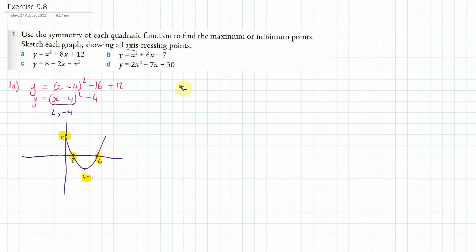Let's do example b. First of all, I'm going to complete the square. That gives x plus 3, all squared, subtract the square of 3 which is 9, minus 7. So the equation becomes y equals x plus 3, all squared, minus 16. That means the minimum point is at (−3, −16) — making that bracket equal to zero gives the x value, and minus 16 is the y value.